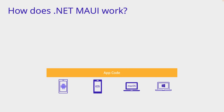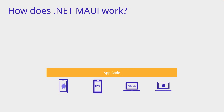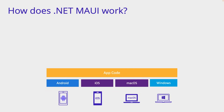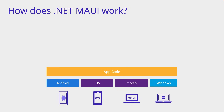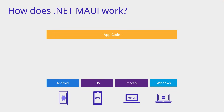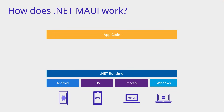The first layer of the technology cake is the native platform SDK. This is what Google, Apple, and Microsoft ship for those platforms for you to work with. So how do we get from our .NET app code to those platforms and running on devices? First, we need something that can run .NET code: the .NET runtime.